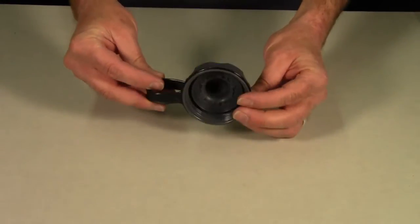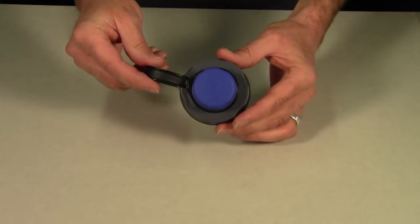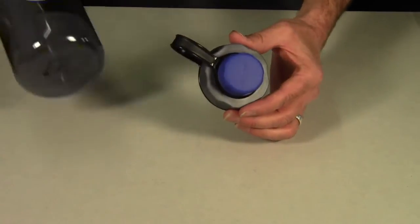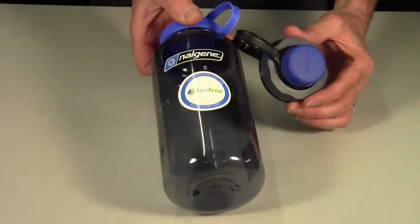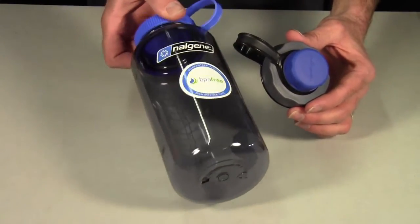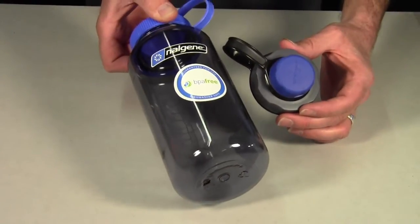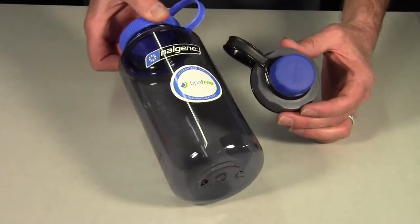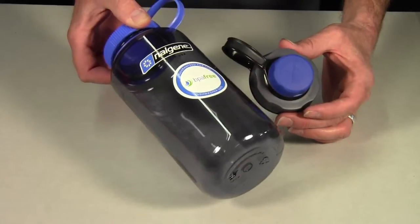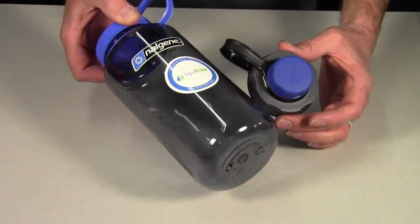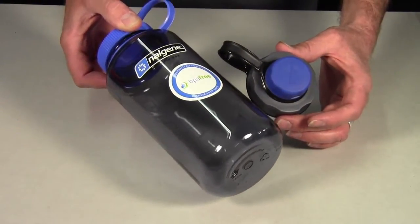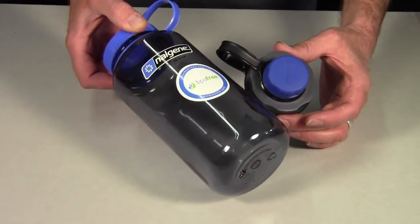Here we have the Cap-Cap. The Cap-Cap solves the conundrum that you have with a Nalgene water bottle. With a Nalgene water bottle, you can never decide whether to get the large mouth or the small mouth because the large mouth is much easier to clean, you can mix drinks in it, you can put ice tubes into it easily, but it's very hard to drink out of.